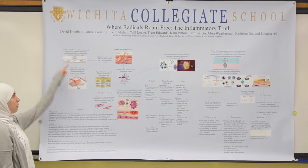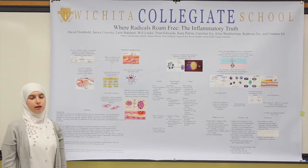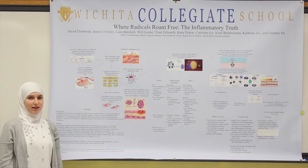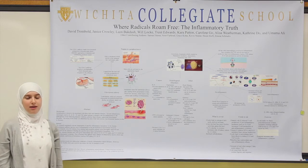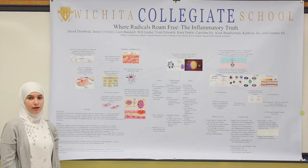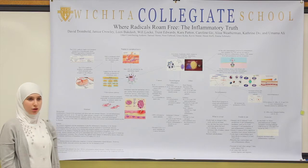In the COX-1 pathway, thromboxanes are produced, and that leads to blood vessel constriction and the aggregation of platelets. In the COX-2 pathway, prostaglandins are produced, and those stimulate pain receptors.